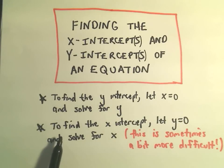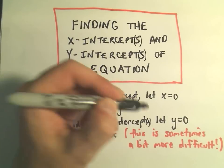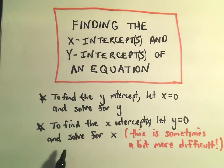The second part's a little harder. If you want to find the x-intercepts, we plug in y equals 0 and solve for x. This usually provides some sort of equation that you have to work with.